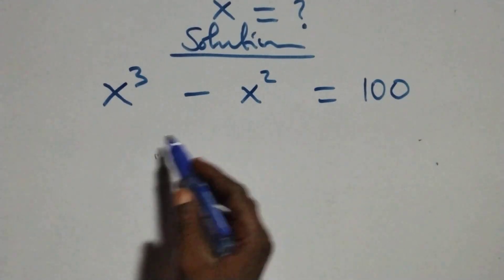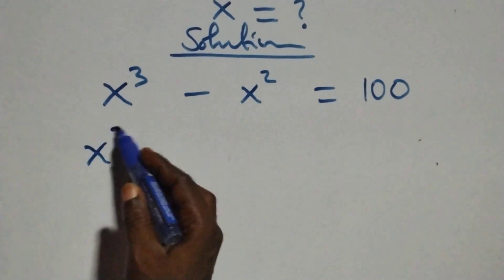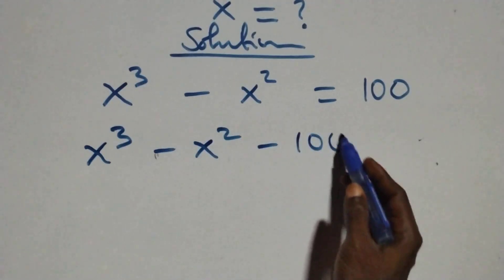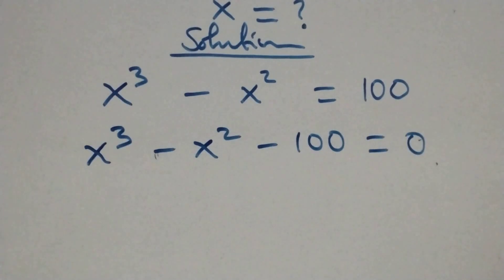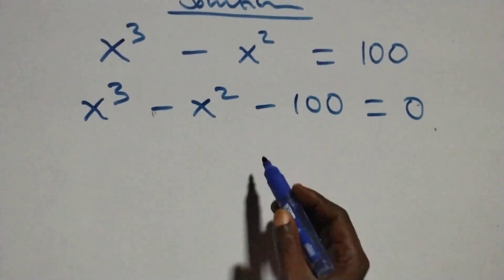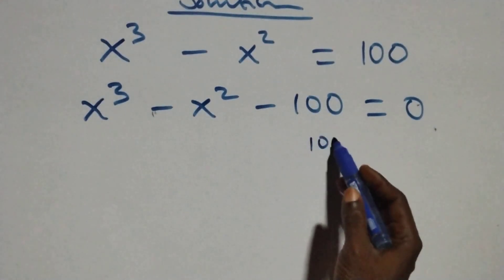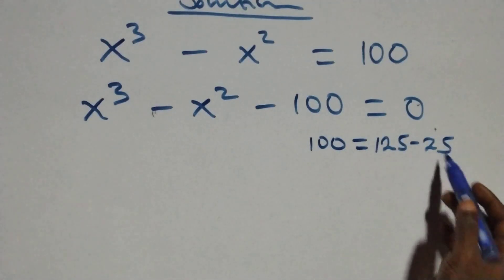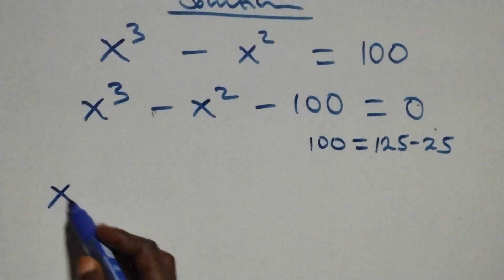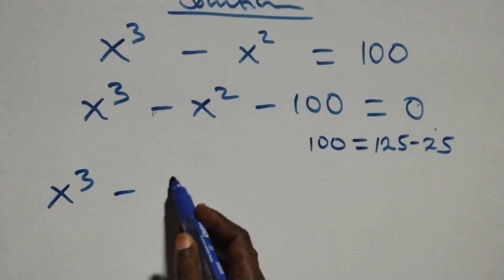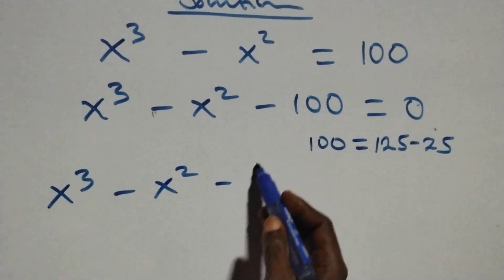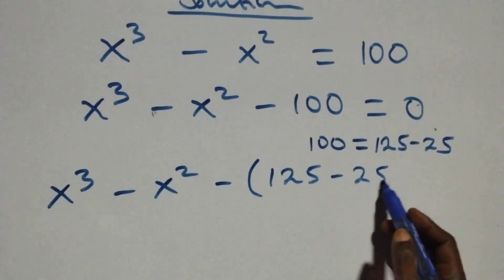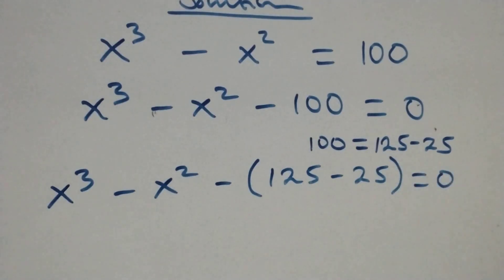we take 100 to the left hand side and this becomes x cubed minus x squared minus 100, then equals to 0 here. Then here we can express 100 as 125 minus 25. This equation becomes x cubed minus x squared minus (125 minus 25) plus brackets, then equals to 0 here.